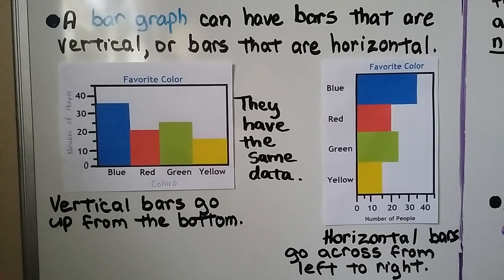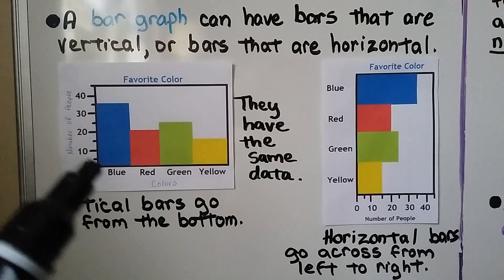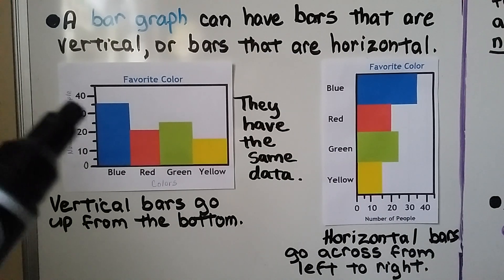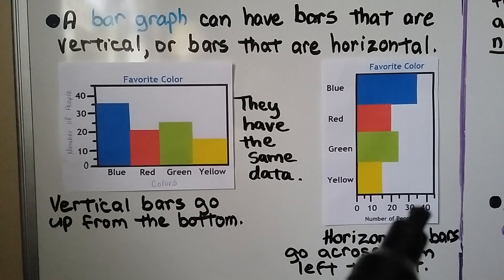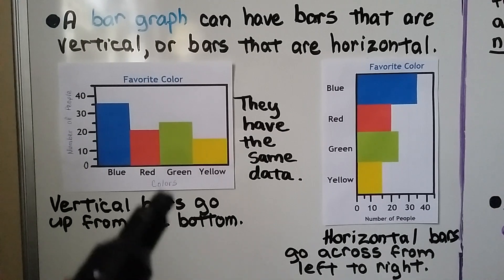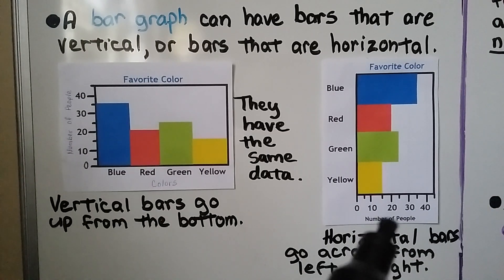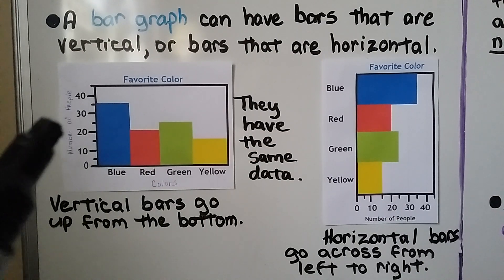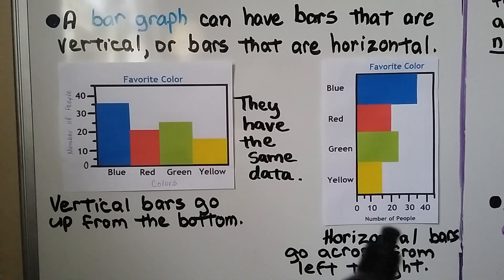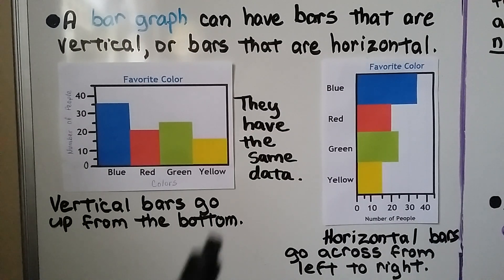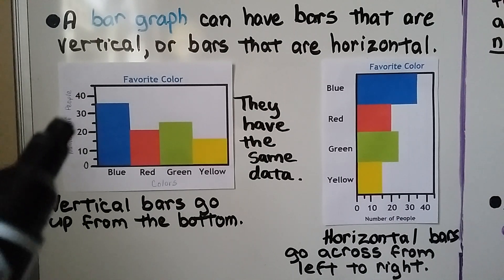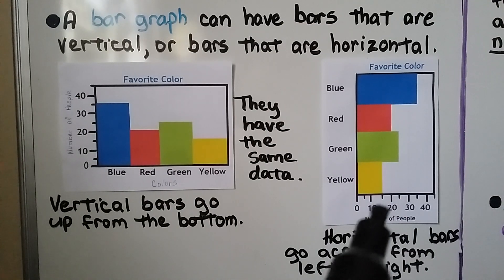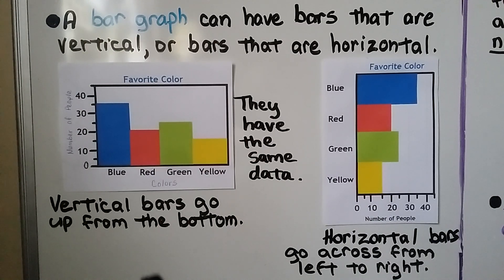Looking at blue: here's 30, here's 40, and it's in the middle, so it must be 35. On the horizontal graph, blue is also at 35. Red is at 20. Green is in between 20 and 30, so it must be 25 — and on the other graph green is also 25. Yellow is in between 10 and 20, so it must be 15.